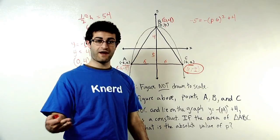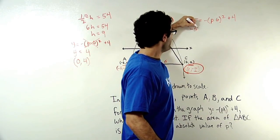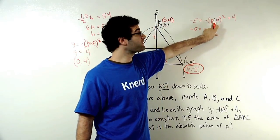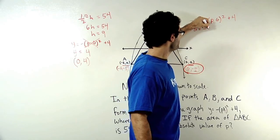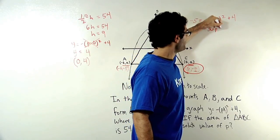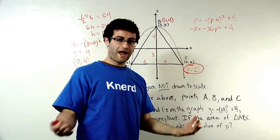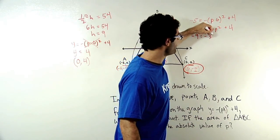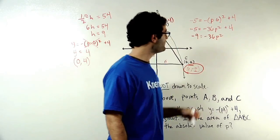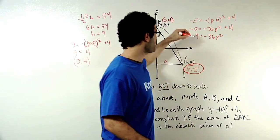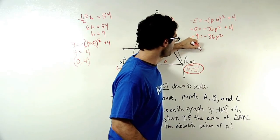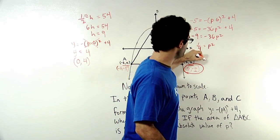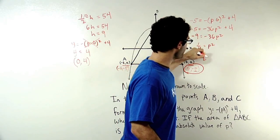And I continue to simplify from there. Negative 5 is equal to negative, I square both of these terms. 6 squared is 36. P squared is P squared. And again, add 4 at the very end. Subtract 4 from both sides. I end up with negative 9 equals negative 36P squared. Divide both sides by negative 36. And I end up with positive one fourth equals P squared. Take the square root, and I get that P is equal to positive or negative one half.